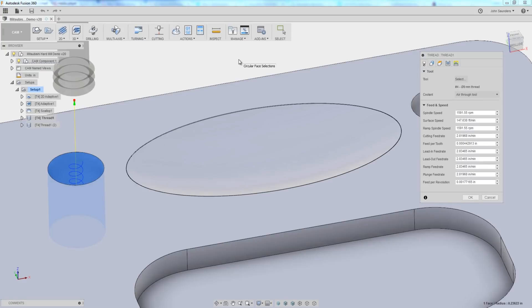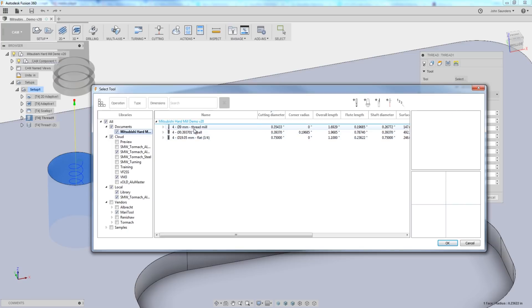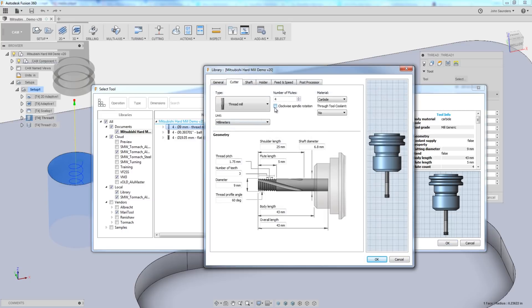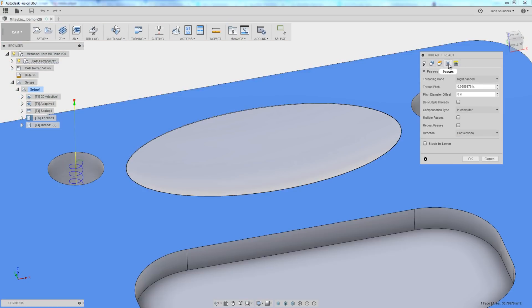Here is how we program this in Fusion 360. Some quirky things that we had to do to make this work, including setting up the actual tool to run counterclockwise, which counterintuitively you do by unchecking the clockwise, because this tool cuts left-handed, quite strange, something I've never done. Then we have to thread mill top down because obviously we can't plunge to the bottom of the hole, we don't have a hole yet.